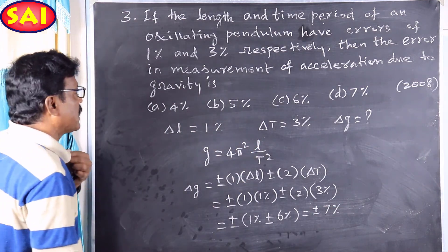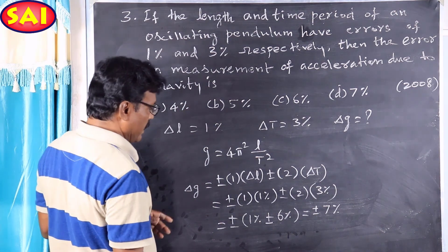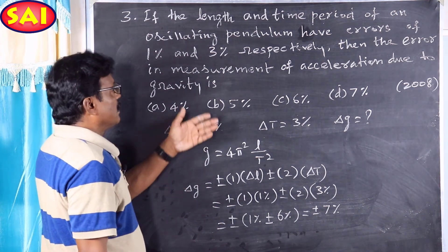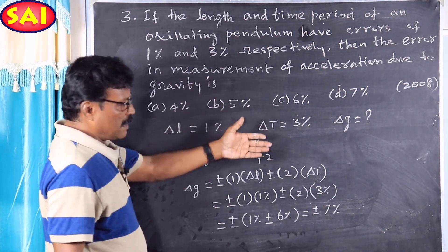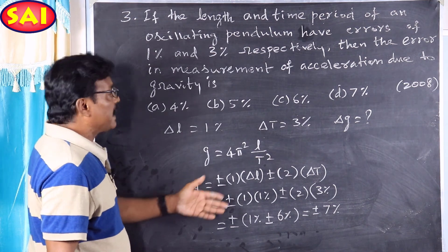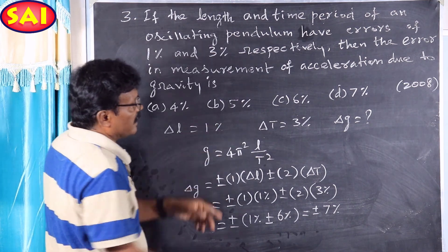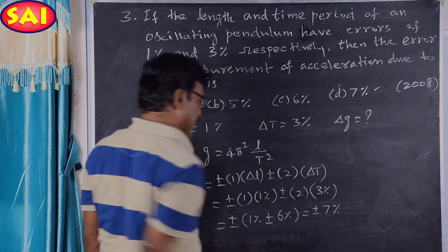So the error in calculating g will be option D, 7 percent. To be continued.